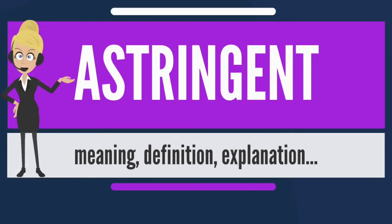An astringent substance is a chemical compound that tends to shrink or constrict body tissues. The word astringent derives from Latin 'astringere', meaning to bind fast.